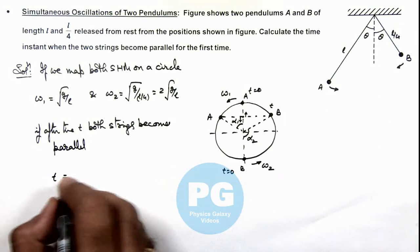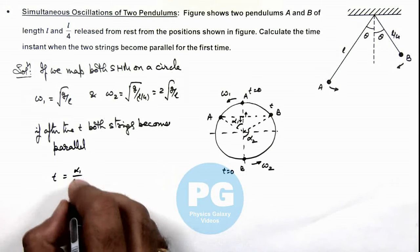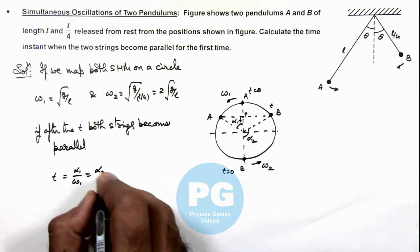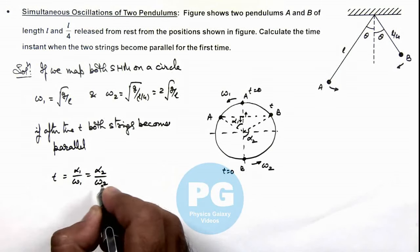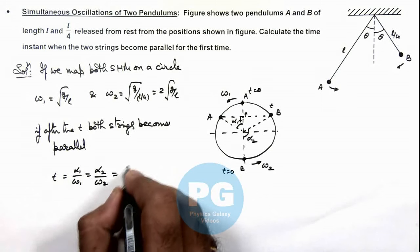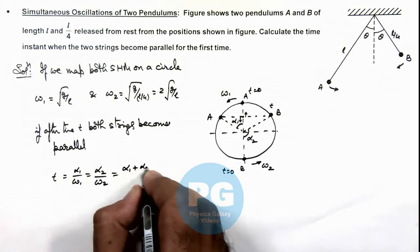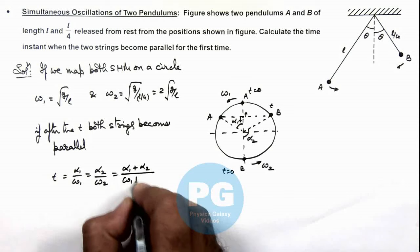Here we can write the value of t is alpha_1 by omega_1 is equal to alpha_2 by omega_2. So here we can also write it as alpha_1 plus alpha_2 by omega_1 plus omega_2.